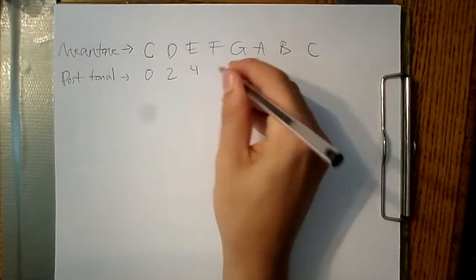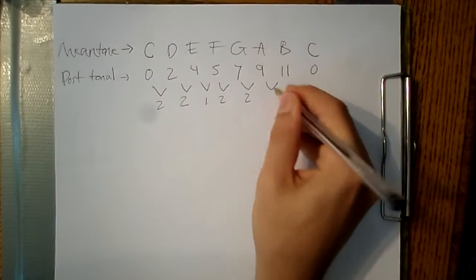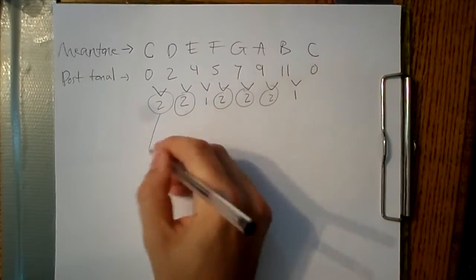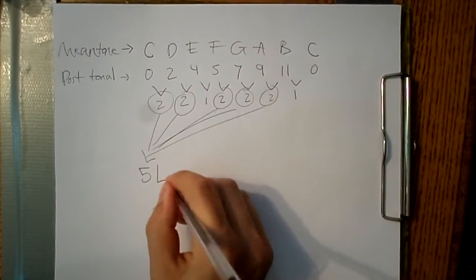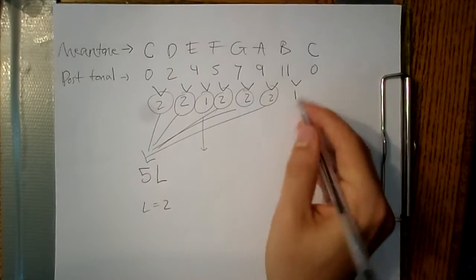Here's the diatonic scale in 12-equal. The 1s are a small step, and the 2s are a large step. So there's 5 large and 2 small, and we can name that by the letters, just 5L, 2S.